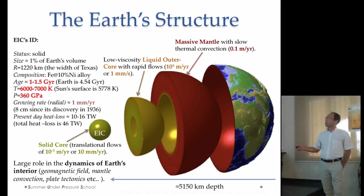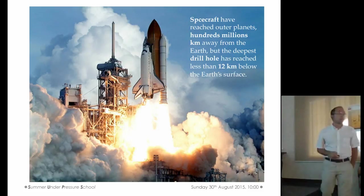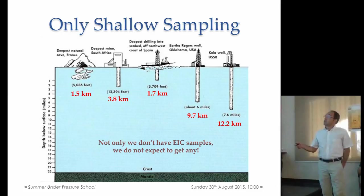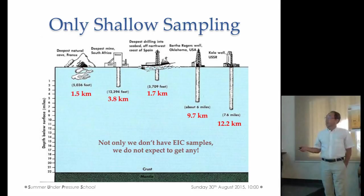Spacecraft have reached many hundreds of millions of kilometers from Earth's surface, but if you try to drill in the other direction you can only reach 12 kilometers. For example, natural caves in France reach 1.5 km depth, mines in South Africa 3.8 km, drilling the seabed 1.7 km, and wells in the USA and Russia a maximum of 12.2 km — still far from the 6,370 km down to the Earth's inner core. We don't have samples, and we don't expect to get any.